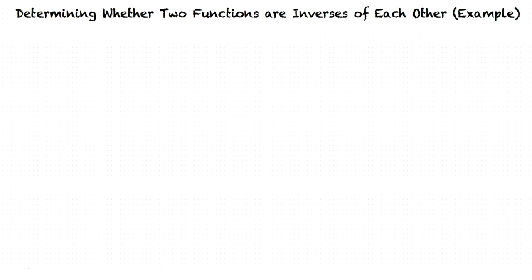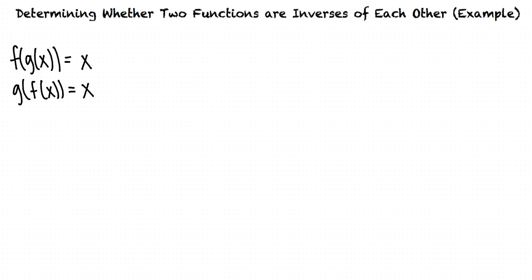This is an example video for determining whether two functions are inverses of each other. We will specifically focus on the conditions that define whether two functions are inverses of each other. The functions f and g are inverses of each other if and only if f of g of x equals x for all x in the domain of g, and g of f of x equals x for all x in the domain of f. Let's take a look at why this is.